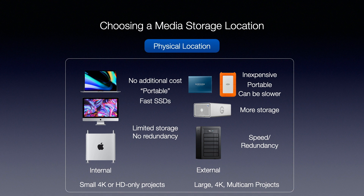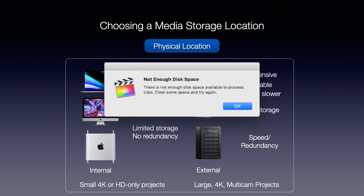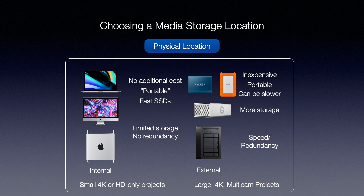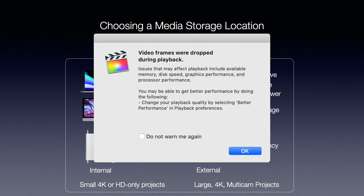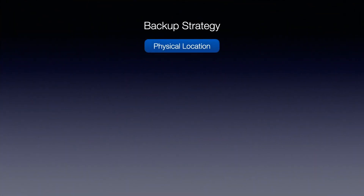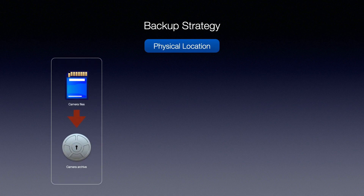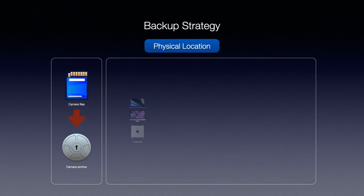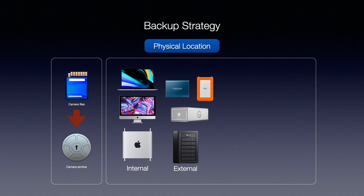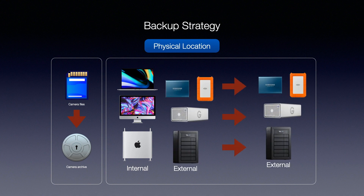So why should you care about where you store your media? Well, if you choose the wrong location, number one, you could run out of space right in the middle of a project. Or second, you could have difficulty playing back your material because you chose a location that isn't fast enough or robust enough to play back your project in Final Cut Pro 10. Once you've established your storage, you're also going to want a backup strategy. While files on camera cards can be backed up directly to a camera archive, the media you store internally or on external devices will need to be backed up to additional devices as well. One way I like to do that is using the application Carbon Copy Cloner, which will duplicate the contents of a drive to another location.